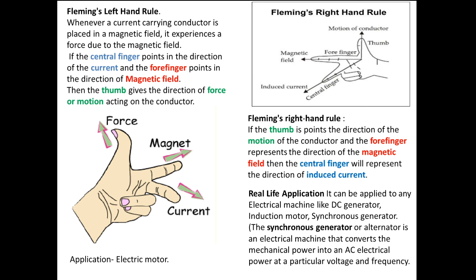But since the nature of the current, source of the current are different, so two rules are given. And it is used in DC generator, induction motor. And later on we will see AC generator - that is in our syllabus. So this much about Fleming's left hand and right hand rule.